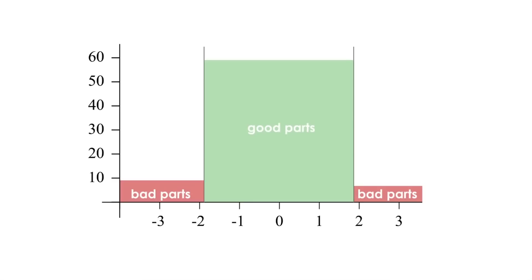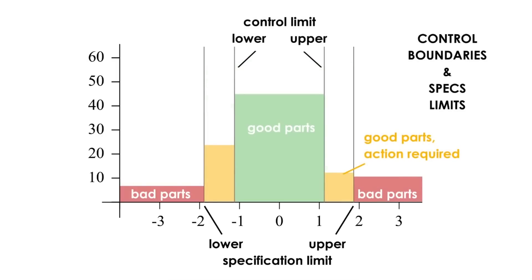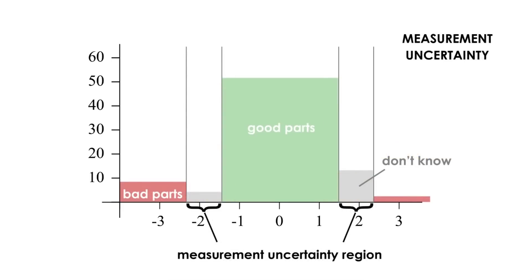The boundaries may, for example, represent the tolerances of the dimension we measured, or they could be the control boundaries, or they could be the measurement uncertainty.